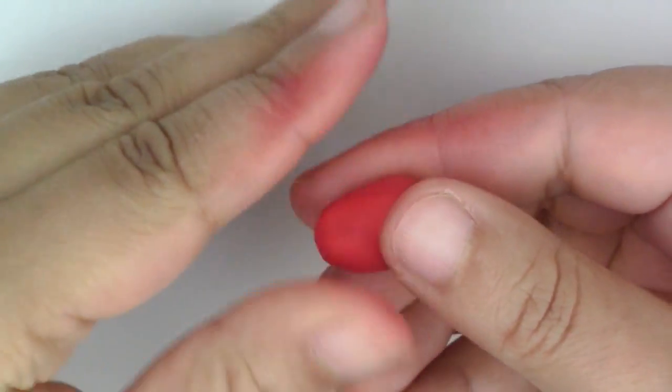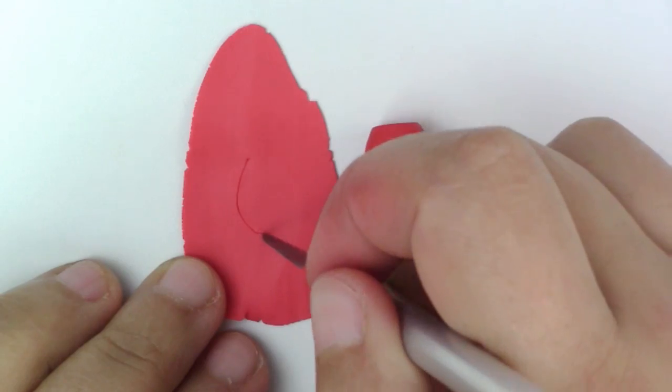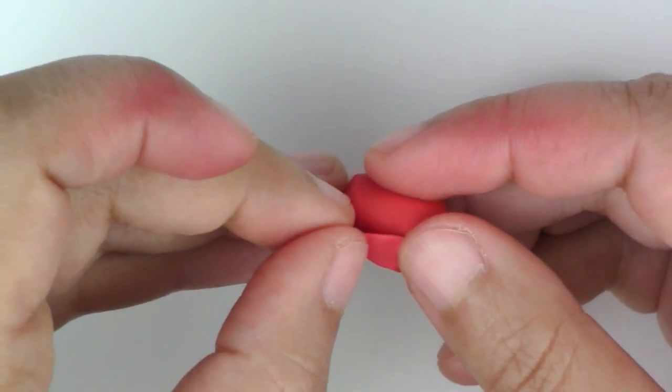For the body, make a chubby teardrop, and cut off the top. Flatten a piece of the lighter red, and place it on the belly.